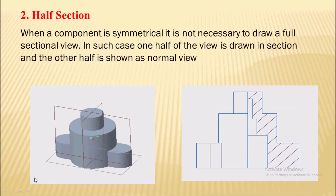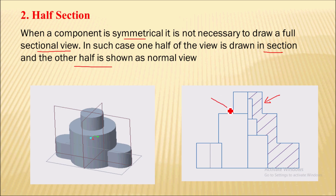The next type is the half section. When the component is symmetrical, it is not necessary to draw the full section view. In such a case, one half of the view is drawn as a section and the other half remains as a normal view. This is only applicable for symmetrical components, because in just one half section we can show the internal invisible details, since the other portion is symmetrical.